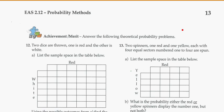Alright, so this was just a hint for you if you need it in your workbook. Feel free to skip watching this video if you don't feel like you need it. So question 12. Two dice are thrown, one is red and the other is white. In the sample space, remember that's all possible outcomes.